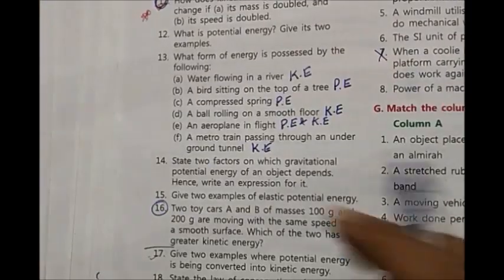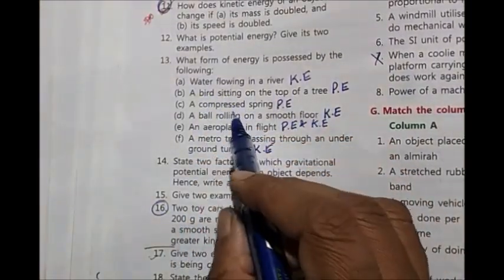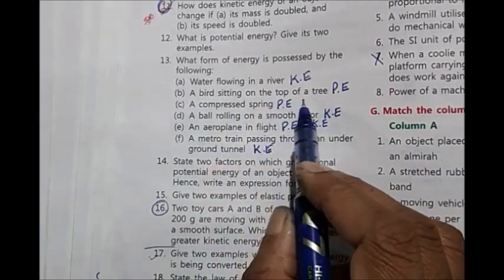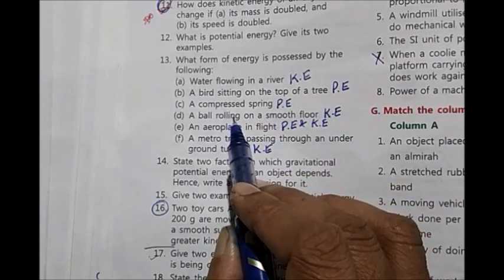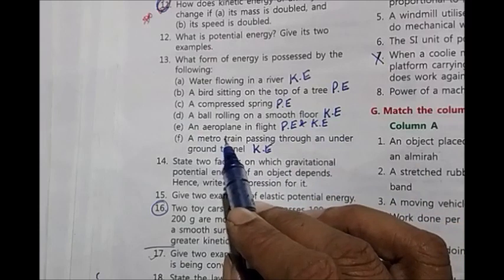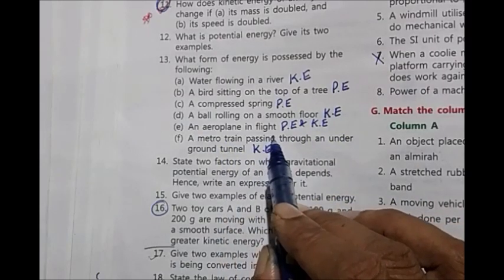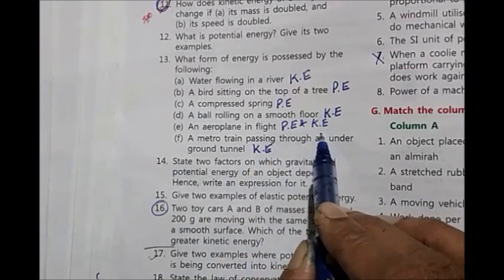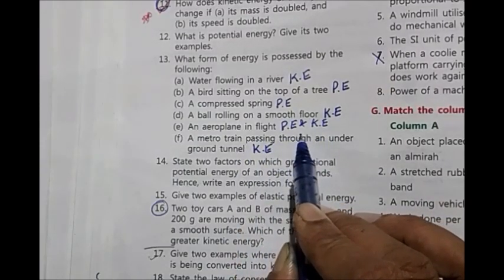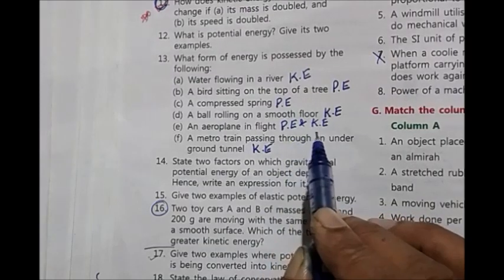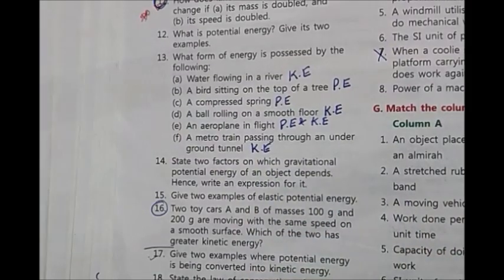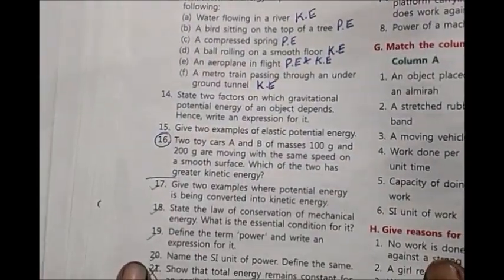Coming to 13th question: What form of energy is possessed? Water flowing in a river - kinetic energy. Bird sitting on the top of a tree - potential energy. Compressed spring - potential. Ball rolling on a smooth floor - kinetic. Aeroplane in flight has both potential and kinetic. Why? Because it's moving, it has kinetic. Because it is at a height, it will have potential. A metro train passing through an underground tunnel - again, kinetic energy.